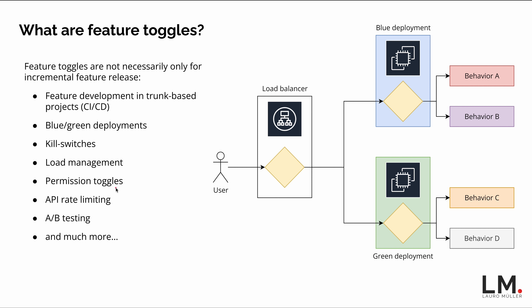Load management and permission toggles are also important. Permission toggles manage what different users can do in the application — there's a gray area where feature toggles apply, since we have different behaviors for different user types, though permissions are a whole separate world. API rate limiting and A/B testing are other examples, where we randomize user traffic between two variants and collect behavioral data. There are many applications; it's a very powerful tool.